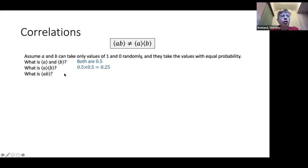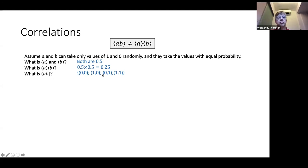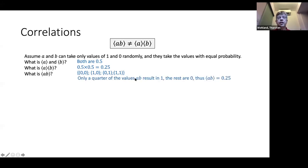Now what is the average of A times B? You can have A=0,B=0; A=1,B=0; A=0,B=1; or A=1,B=1 — all with equal probability of one quarter. Only the last combination gives a product of one; the rest are zero. So in one quarter of cases the product is one, and the average of A times B is 0.25.